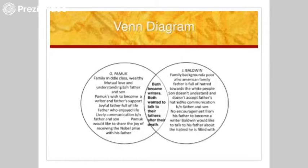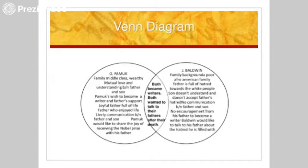This is an example of how the students write a comparison contrast essay. They analyze two literary works: Orphan Pamuk's My Father's Suitcase and James Baldwin's Notes of a Native Son. The students write a comparison contrast essay about the father and son relationship in both stories, based on the analysis of the two stories.